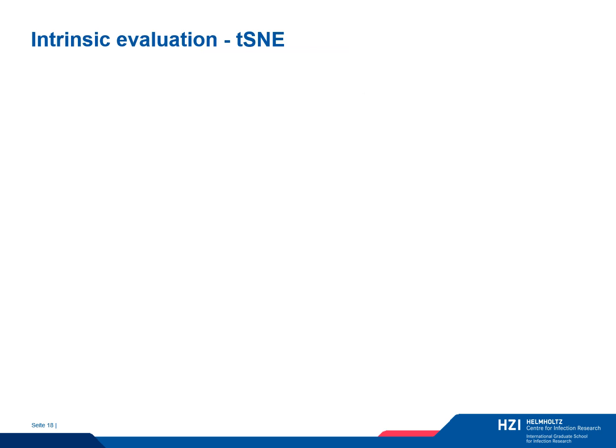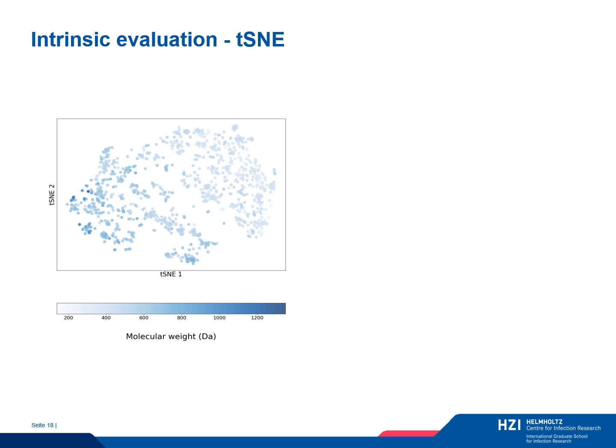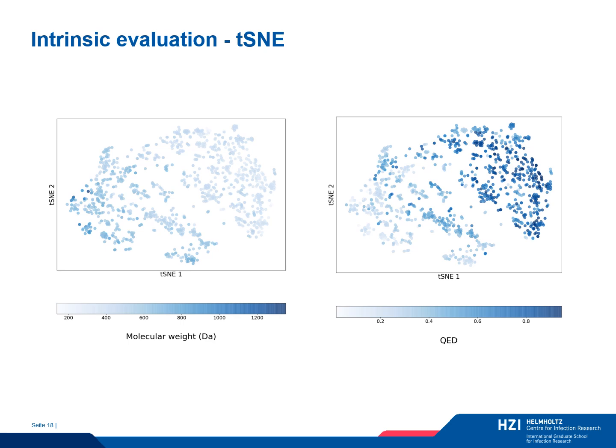To evaluate how the model maps chemical information, we produce t-SNE plots for molecular properties. Each dot in the plot represents a molecule, and deep blue color indicates a higher value in the corresponding property. We examine two properties. The first is molecular weight: smaller values are gathered in the top-right corner, whereas higher values are located in the left part, forming some clusters, with a gradual increase from right to left. The second plot is QED — quantitative estimate of drug-likeness — an index comprising several molecular properties like the number of hydrogen donors and acceptors, indicating the drug-likeness of molecules. Lower values are located in the left part and increase toward the right, where deep blue dots correspond to molecules with high QED values.